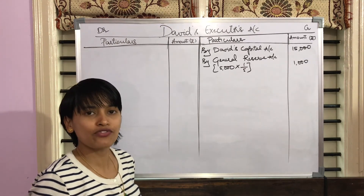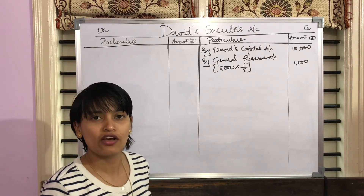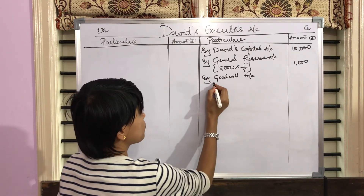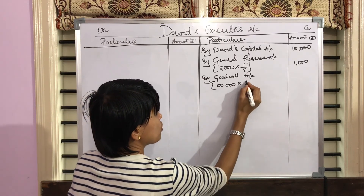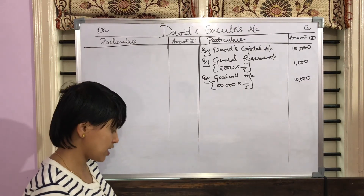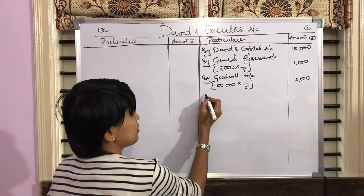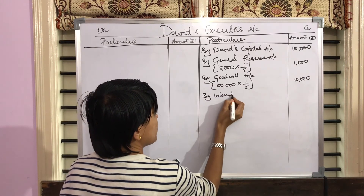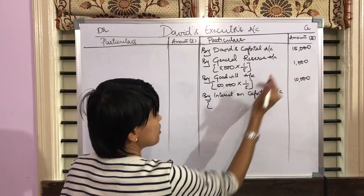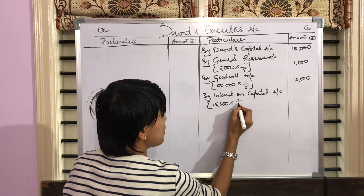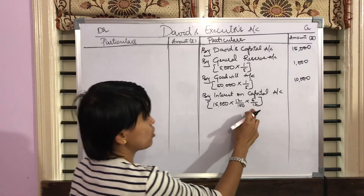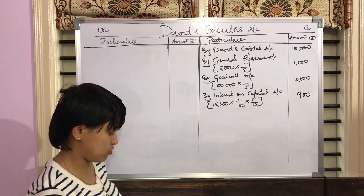Third point — his share of goodwill. The firm's goodwill amounted to Rs. 50,000, so write 'By Goodwill Account'. The firm's goodwill amount is Rs. 50,000, and we need to give only David's share which is Rs. 10,000. Next point — interest on capital is allowed at 12% per annum. Write 'By Interest on Capital Account'. Capital amount is Rs. 15,000, 12% interest for 6 divided by 12 — amount will be Rs. 900.